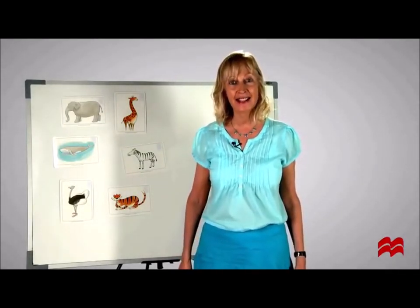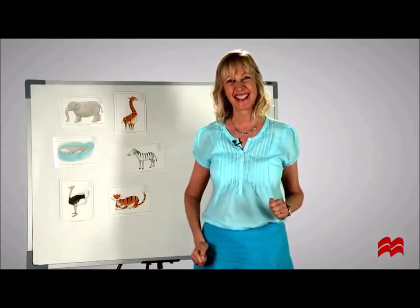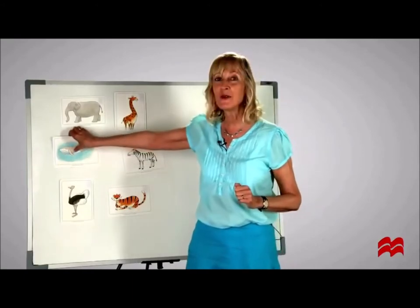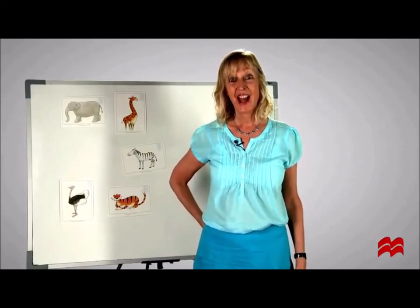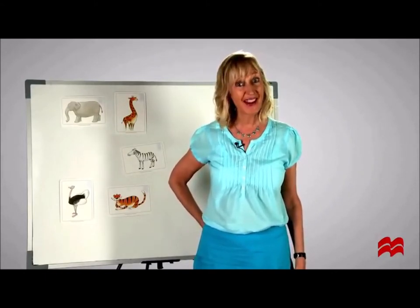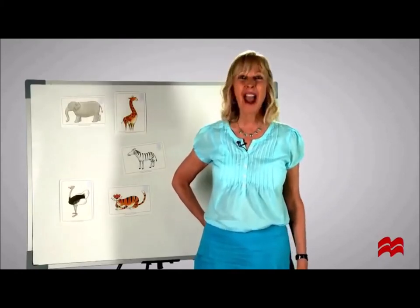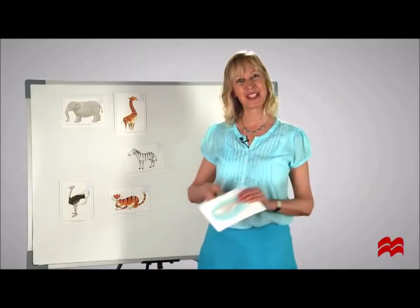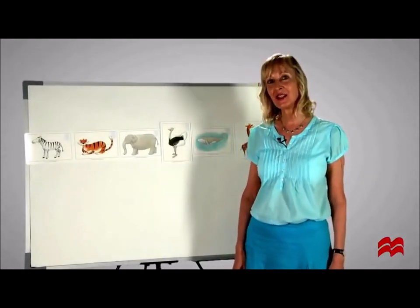This activity is called 'What's Missing'. Ask the children to close their eyes and cover them with their hands — demonstrate this. Remove one of the flashcards from the board and hide it behind your back. Ask the children to open their eyes and say what's missing. 'It's the whale. Very good.'